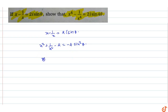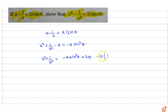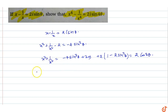So x² + 1/x² equals -4sin²θ + 2, which is 2(1 - 2sin²θ), and this equals 2cos2θ. So x² + 1/x² = 2cos2θ.